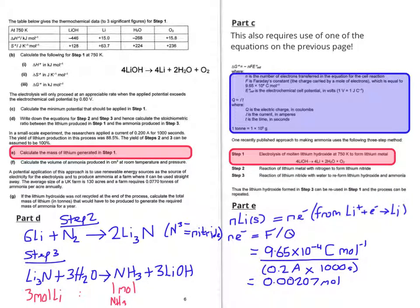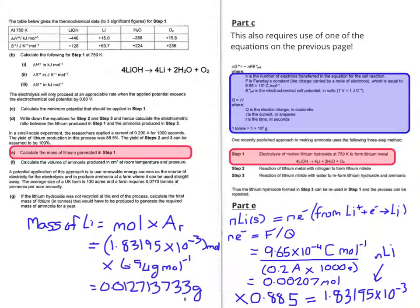So using the Q = I × T equation that's also in the blue box, we can divide the Faraday constant by 0.2 amps times 1,000 seconds which gives us 0.00207 moles of electrons. So that taking into account the 88.5% yield for lithium production gives us 1.83195 × 10⁻³ moles of lithium. So that gives us 0.012713733 grams of lithium.